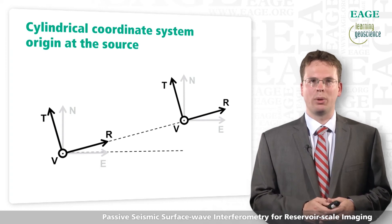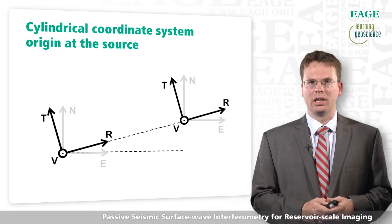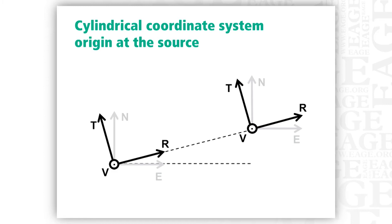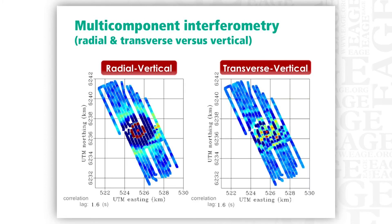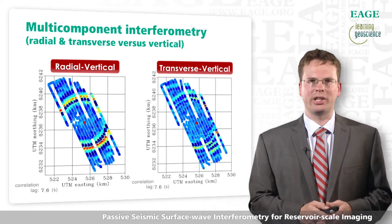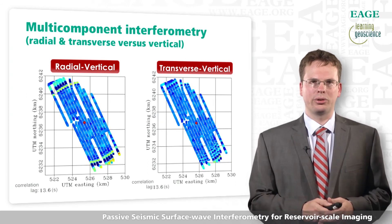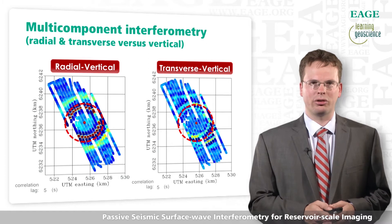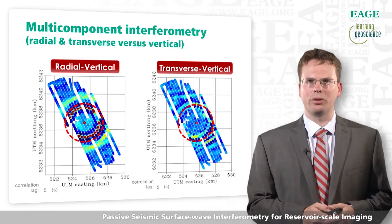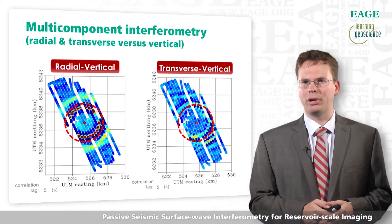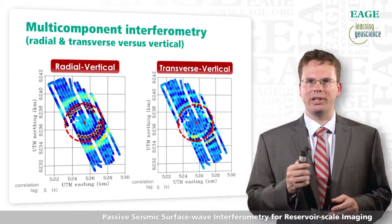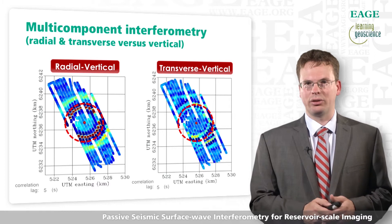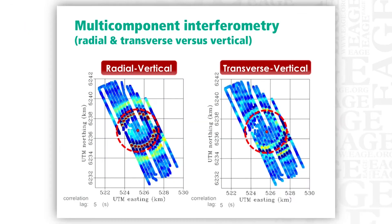In the cylindrical coordinate system centered around the source, we define a transverse component, a radial component, and a vertical component. The radial component points directly from one station to the next, while the transverse component is perpendicular to that line. After rotation to this cylindrical coordinate system, the radial-to-vertical component cross-correlations look much cleaner, and their polarization as a function of angle stays constant. However, we also see a lot of energy left in the transverse-to-vertical component. If the earth were purely stratified, we would expect no energy in that component at all, but the earth is not perfectly stratified and is also anisotropic, so energy leaks from one surface wave mode to the next.